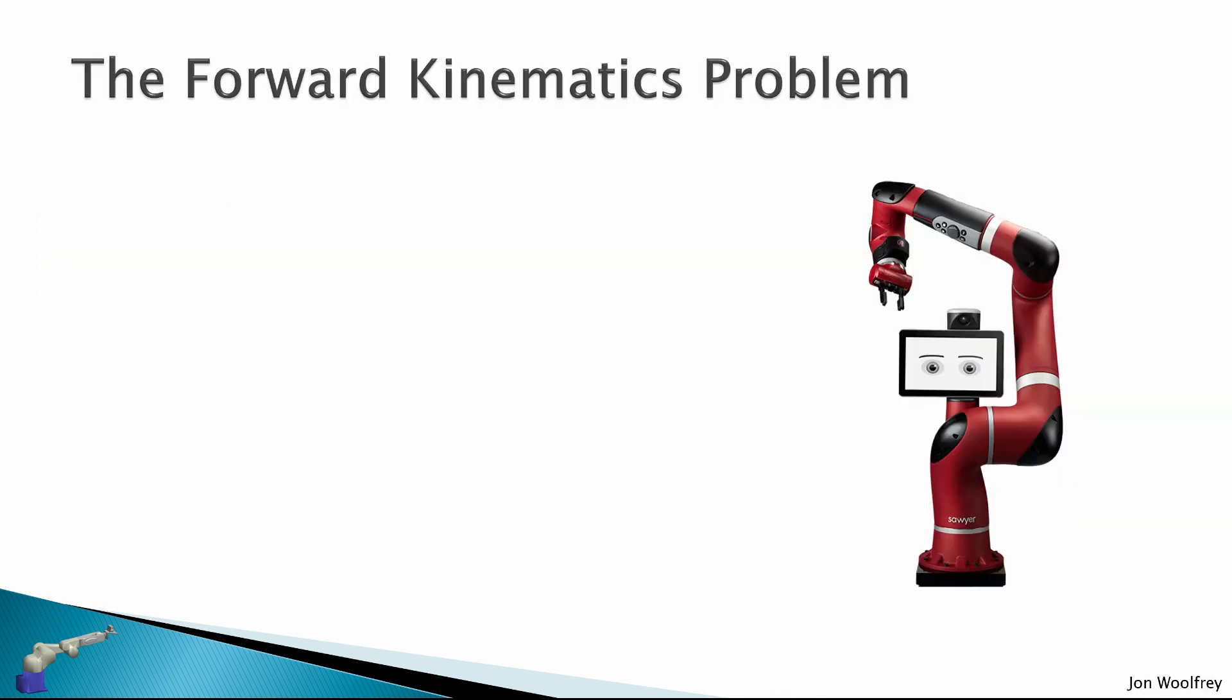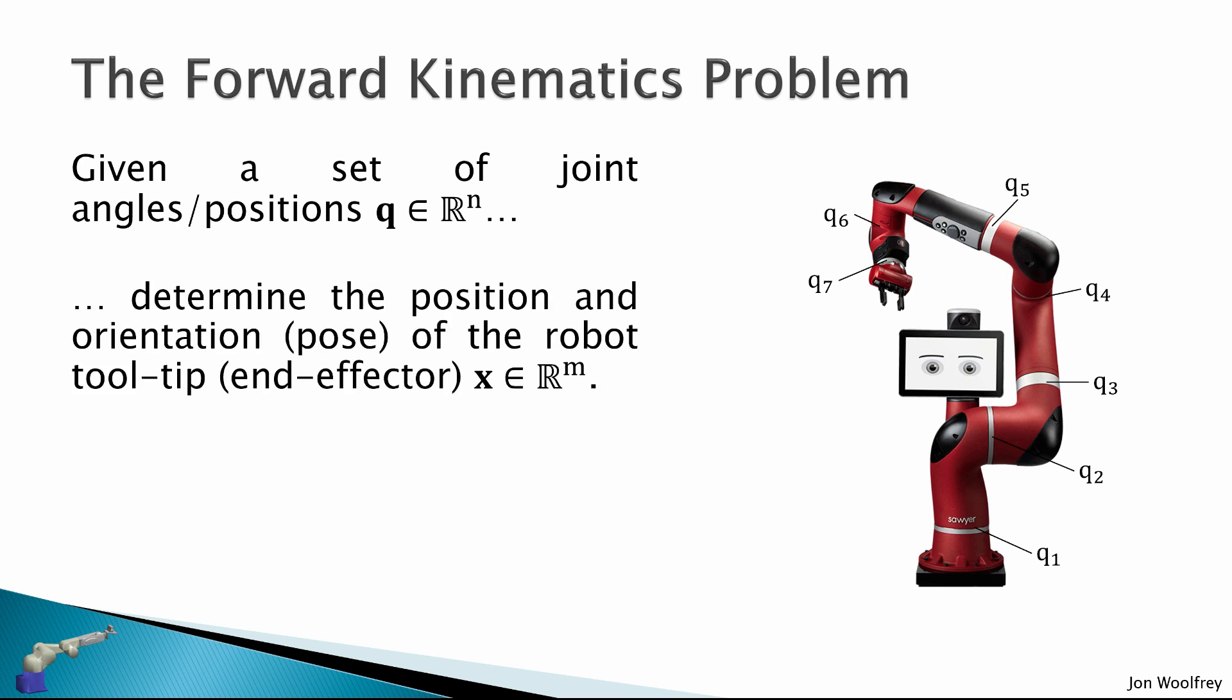So the forward kinematics problem: given a set of joint angles or positions Q in the set of real values in N, then determine the position and orientation, the pose of the robot tooltip or end effector X in the set of real values in M. That is, we have to solve the vector function X equals f of Q or some equivalent.